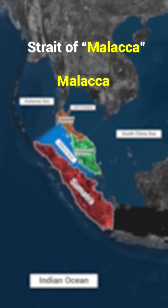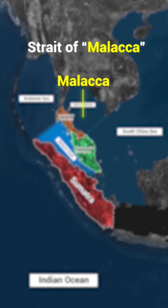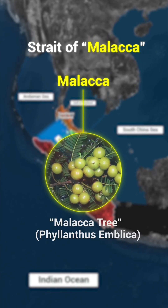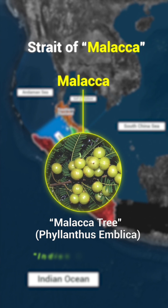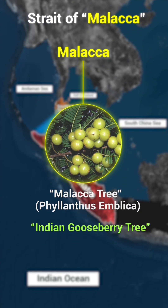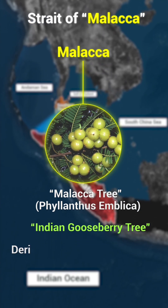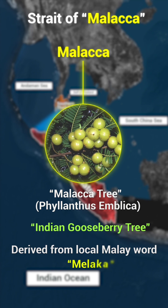The name Molucca is traditionally associated with the Molucca tree, also known as the Indian Gooseberry tree, and is believed to derive from the local Malay word Melucca.